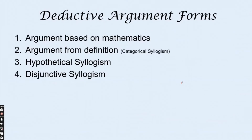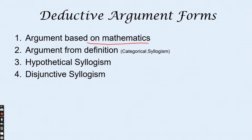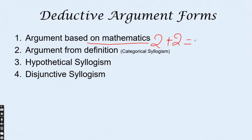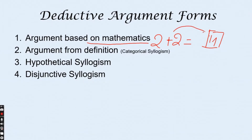Let's see some deductive argument forms. The first is an argument based on mathematics. For example, if you buy two apples and then two more oranges, you conclude you have four fruits in total. This conclusion is based on two plus two equals four — that is an argument based on mathematics.